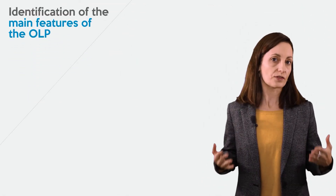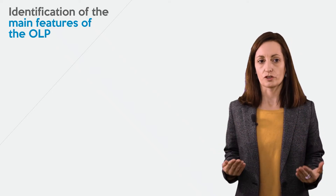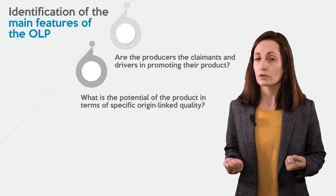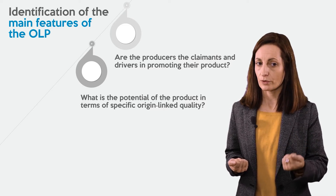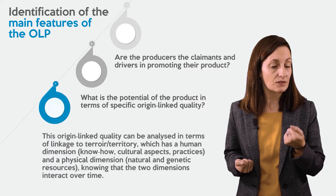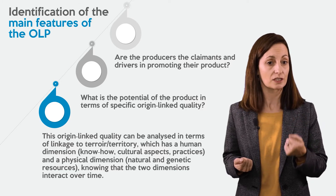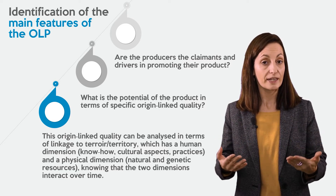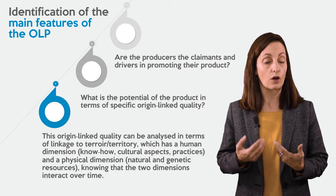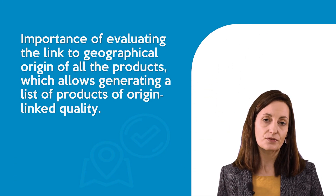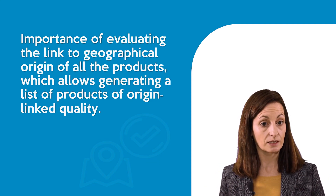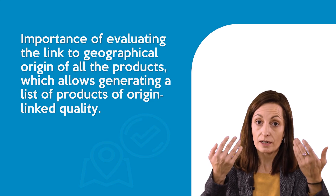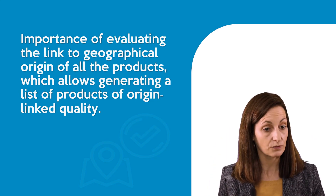What are the main features of the origin-linked product strategy? We need to raise some questions: Are the producers the claimants or drivers in promoting their product? What is the potential of the product in terms of specific origin-linked quality? In order to assess the specific quality, we need to analyze the linkage to the terroir or territory with both human and natural dimensions, knowing that these two dimensions interact over time. It is therefore very important to assess the link between the product and its geographical origin, which will allow generating a list of specific products with specific origin-linked quality.